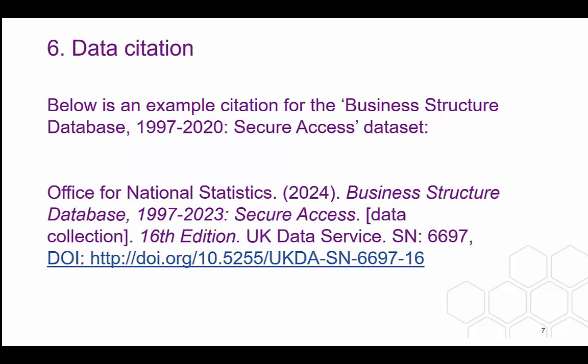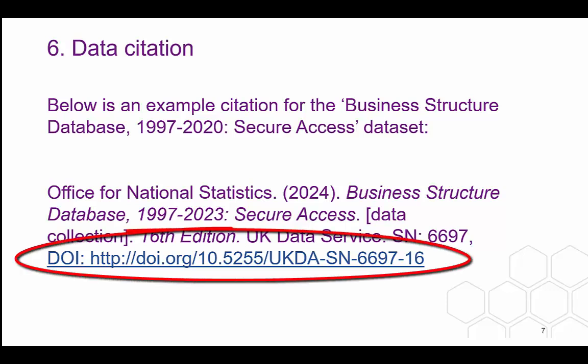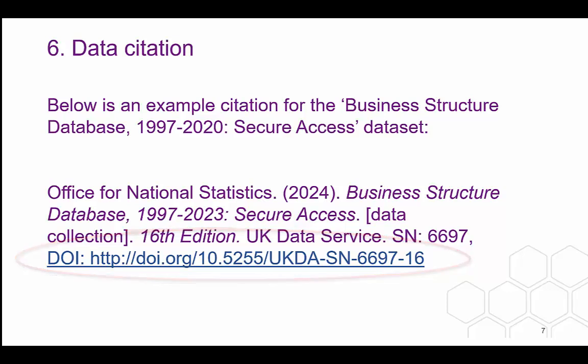The full citation looks like this — the example here is for the Business Structure Database. Citations can be found in the study information file in the original data folder in a researcher's project area. You must include the full data citation, including the DOI number. Citing data is important: if data collectors cannot show that these data are being used, it risks a withdrawal or reduction in funding for that study in the future, which is bad for research.